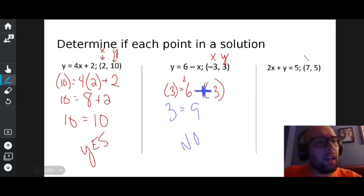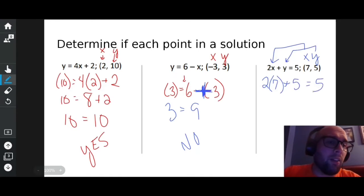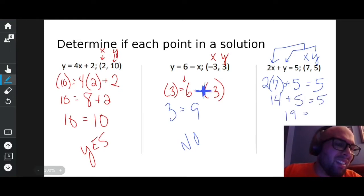So you're an X, but you're a Y. I'm going to replace X with seven. So two times seven plus five equals five. Well, I can tell you right now, this does not look like it's going to work out because two times seven is 14 and 14 plus five is not five. In fact, 14 plus five is 19 and 19 does not equal five. So that's another no. That's very disappointing.